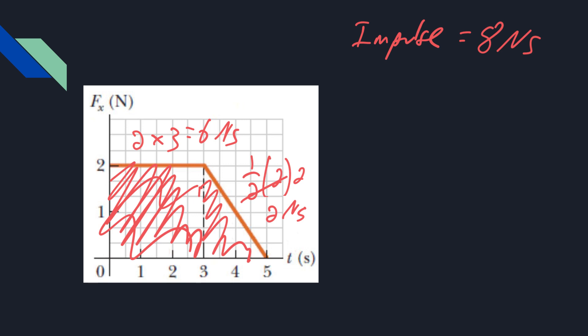Now, another question they might ask is, what is the change in momentum? Well, that would be 8, right? 8 kilogram meters per second. Or maybe they say the mass is 2 kilograms. What's the change in velocity? Well, in that case, you have mass times the change in velocity is 8. So delta V would be 8 over 2, or 4 meters per second.